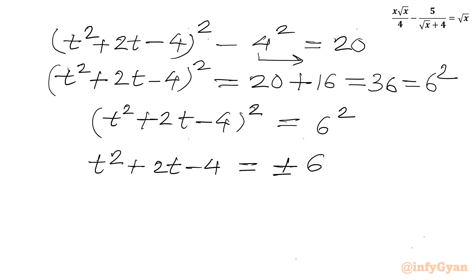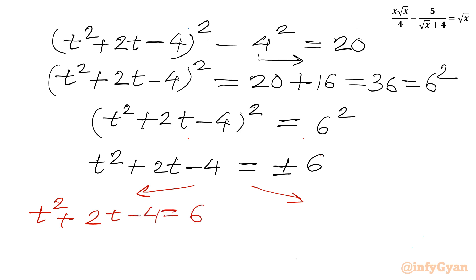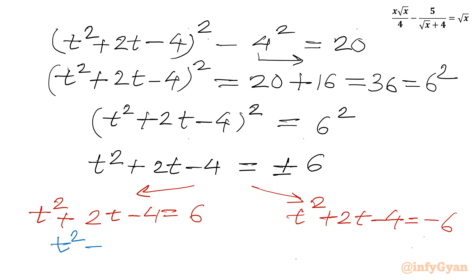From here we will consider two quadratic equations: one with plus 6 and one with minus 6. The first equation: t² + 2t − 4 = 6, which gives t² + 2t − 10 = 0.